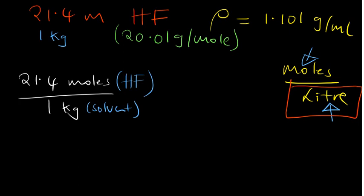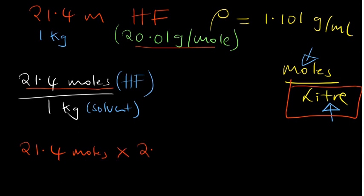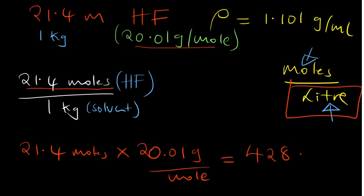Using the density to find the volume, we first need the mass of the solution. Since we have the moles of the solute and its molar mass, we can find the mass of the solute: 21.4 moles multiplied by 20.01 grams per mole equals 428.214 grams. That is the mass of the hydrogen fluoride solute.